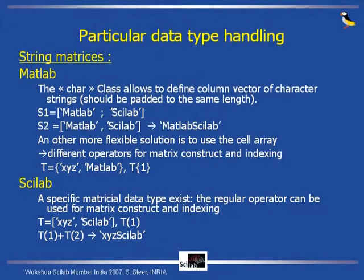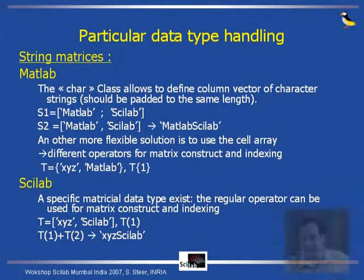There are also differences for some data types — for example, string matrices. In MATLAB, you have two kinds of string matrices. The original one, which is the class 'char', allows defining a column vector of character strings, but these strings must be padded to the same length. For example, here I use S1 equal the character string 'MATLAB', semicolon, 'Scilab', creating a vector of strings with two rows. The first row is MATLAB, the second is Scilab — they happen to be the same length. If I replace the semicolon by a comma, the operation performs concatenation of the two strings rather than building a row vector.